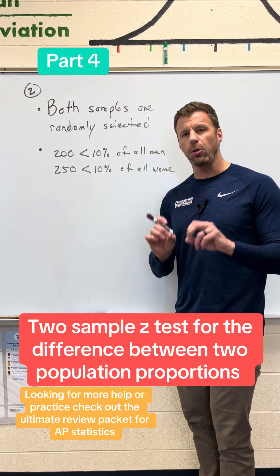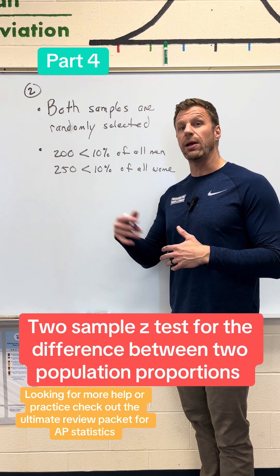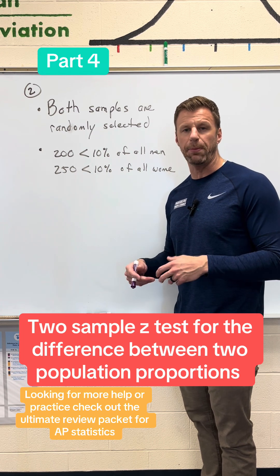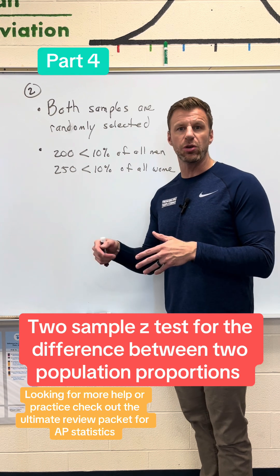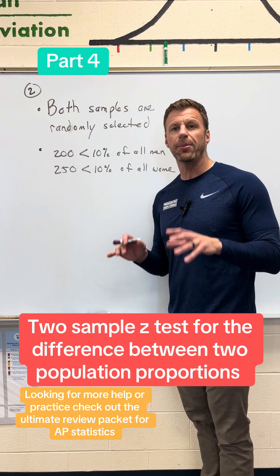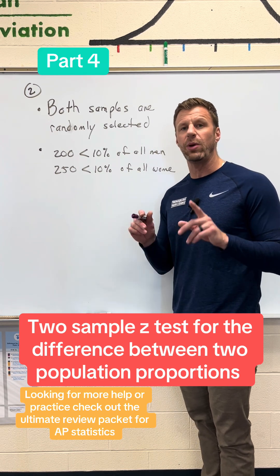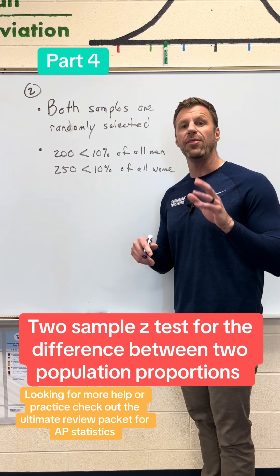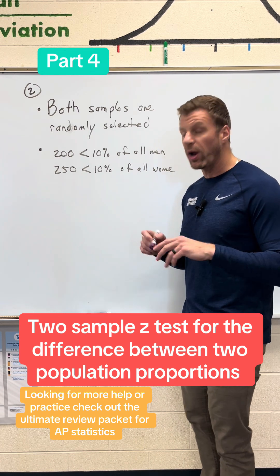But this is where something a little weird happens. A lot of students will do what they'd do for a confidence interval and use the data directly from the sample. From our sample, we had 60 men — that's more than 10 — out of 200, leaving 140, which is also more than 10. But we don't want to use those numbers in a test, because in a test we have an assumption that the null hypothesis is true, and the null hypothesis is that there's no difference.